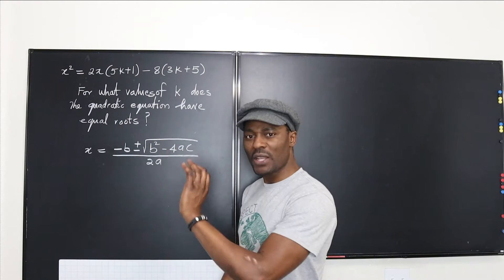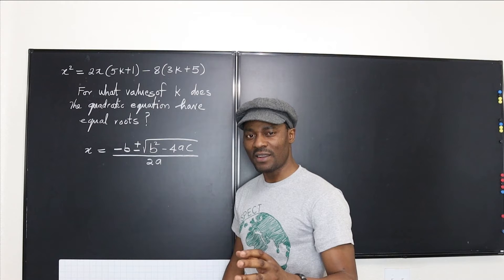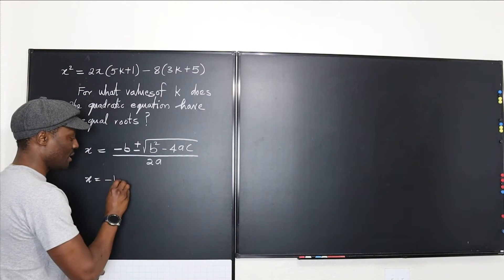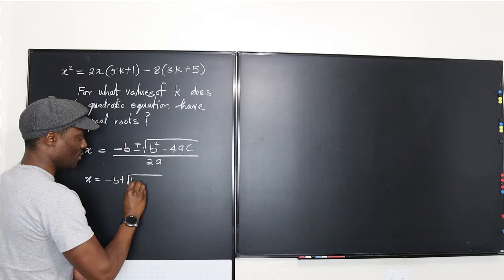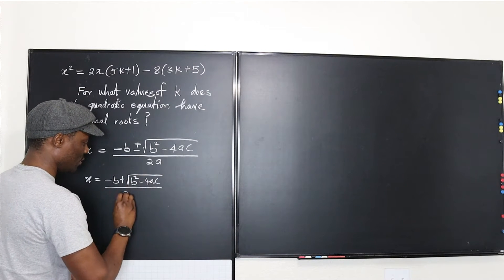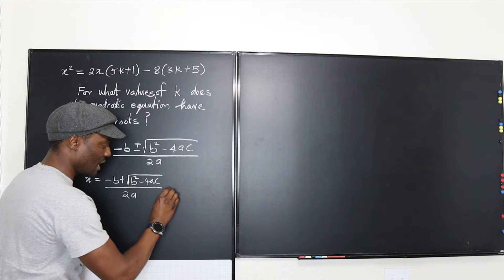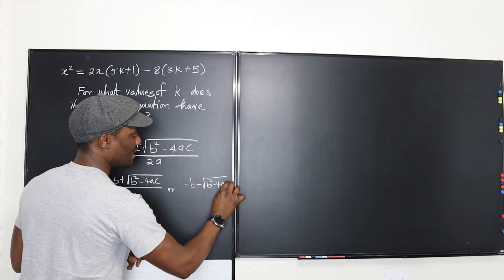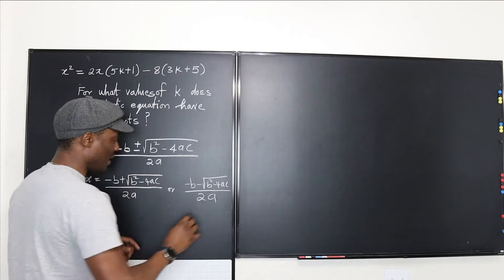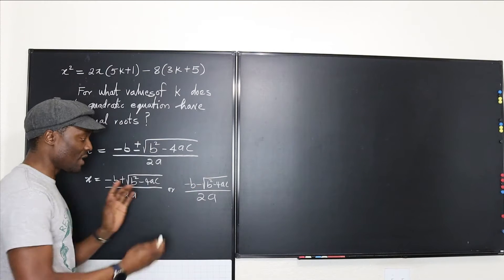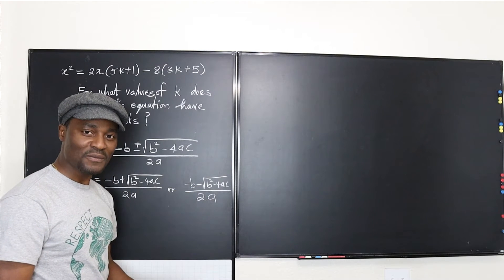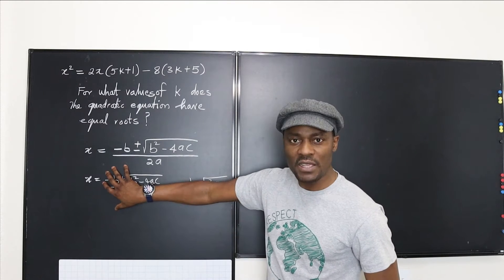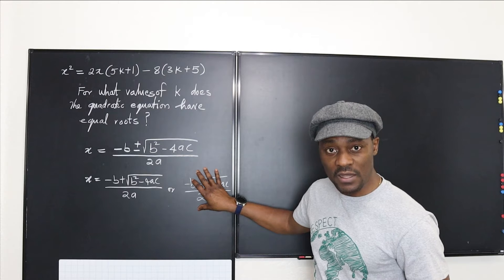Now, in what way can you do plus or minus and still retain the same answer? Let's break this into two. You have x = (−b + √(b²−4ac)) / 2a — that's the first option. And the second option will be x = (−b − √(b²−4ac)) / 2a. So it's either you get the positive or the negative. Everything else is the same. So the major question you want to ask yourself is: under what condition will the answer you obtain here be exactly the same as the answer you obtain here?